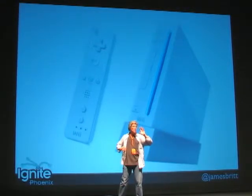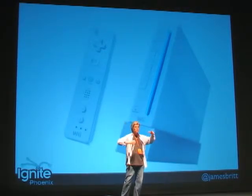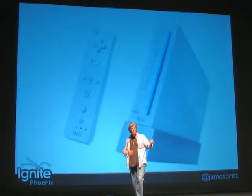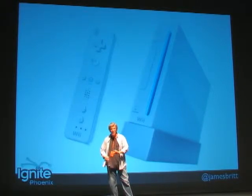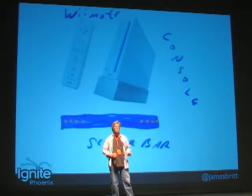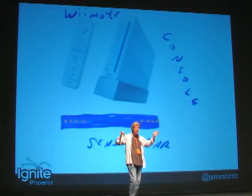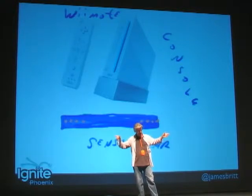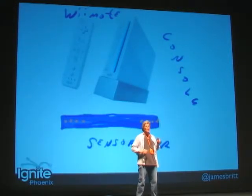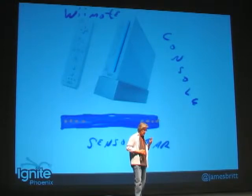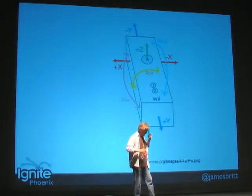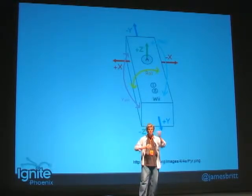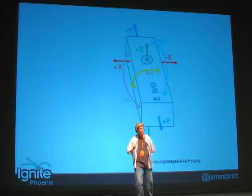With the Wii system, there are three main parts. There's the Wii console — the thing that takes the DVD and hooks up to your TV. And the remote, that's the thing you rapidly click. There are some other controllers like the balance board and Rock Band guitar, but they act very much like the remote. There's a thing called the sensor bar — a gray bar that sits on top of your television with a bunch of lights on the end. We're mainly concerned with the remote and with the sensor bar, and in particular we're concerned with the Wii remote.